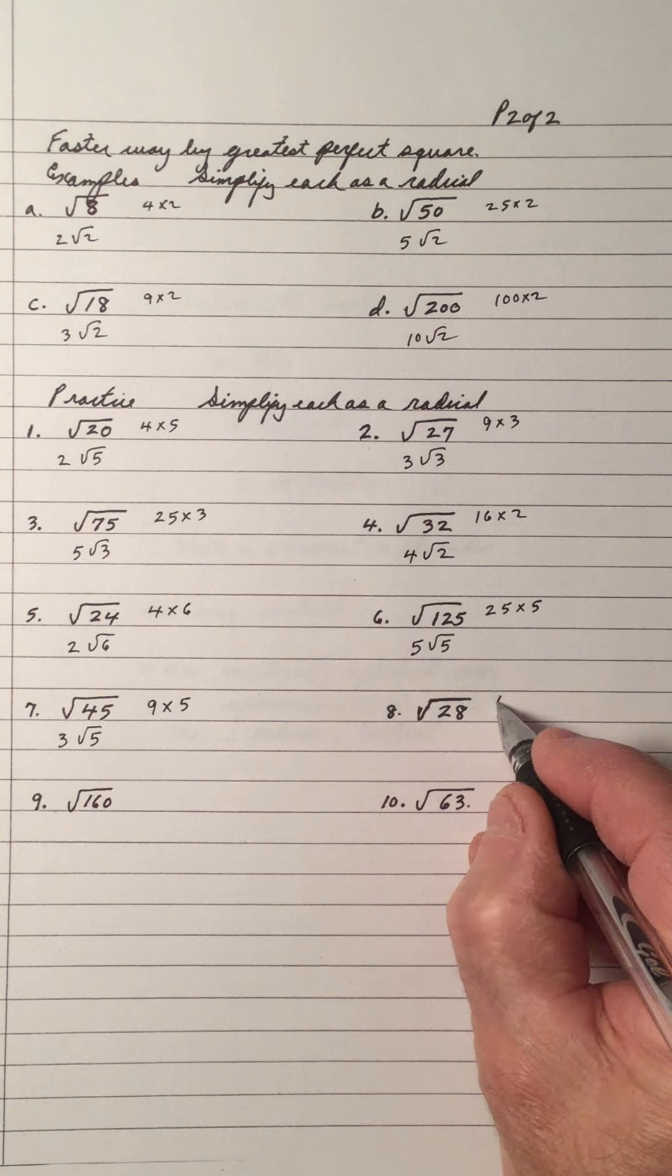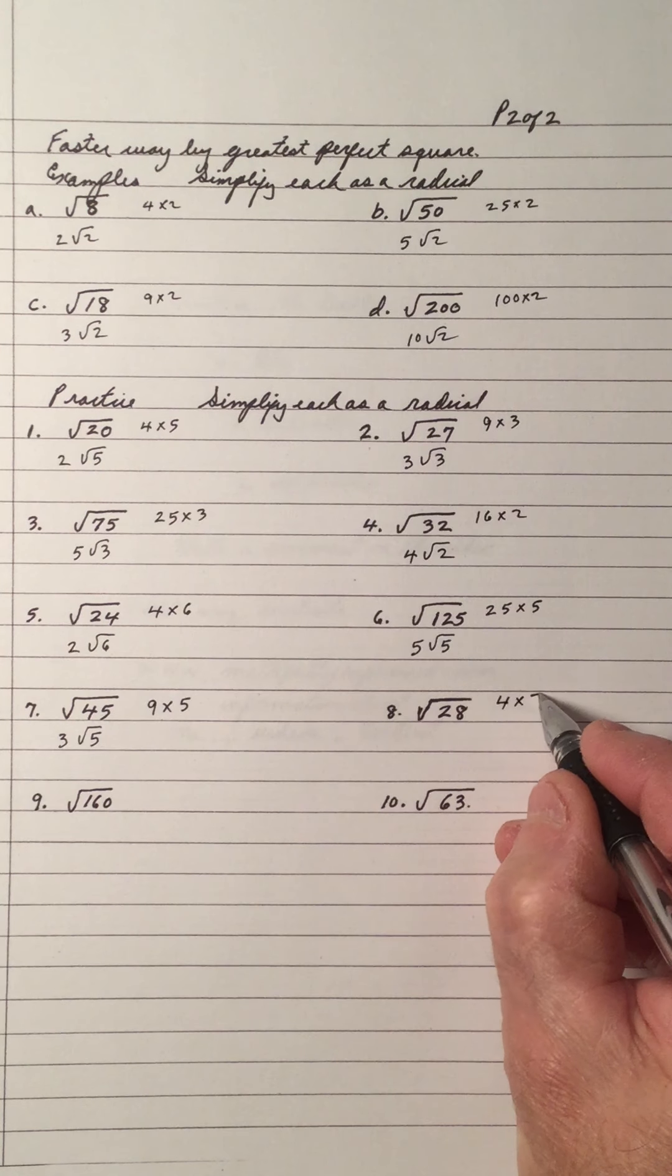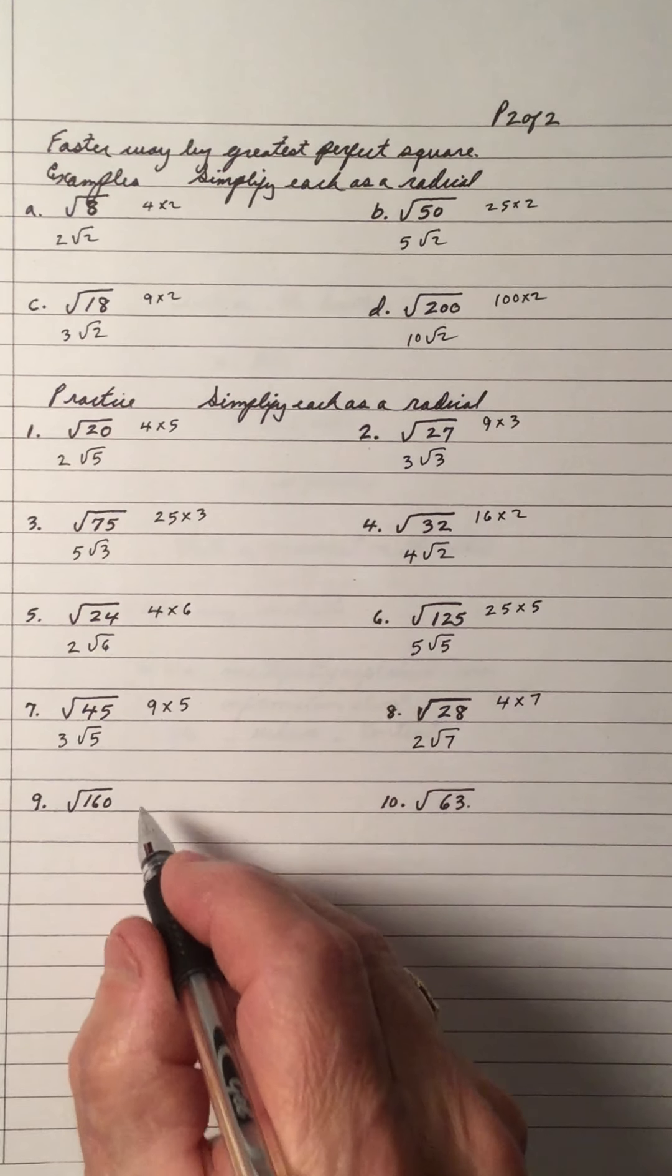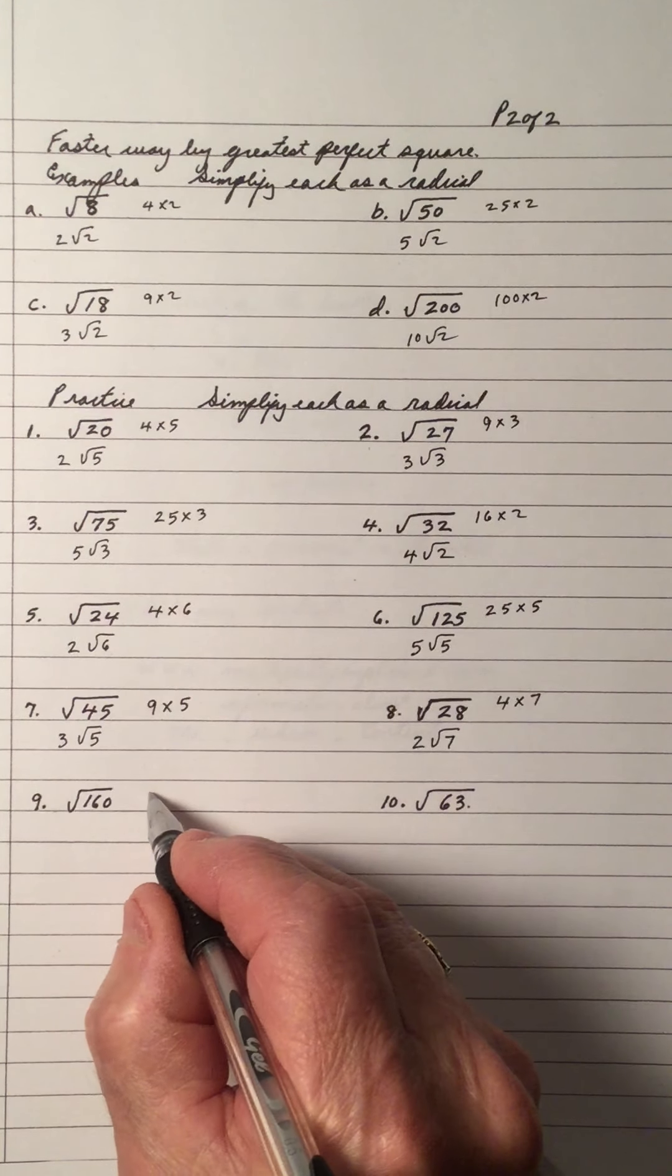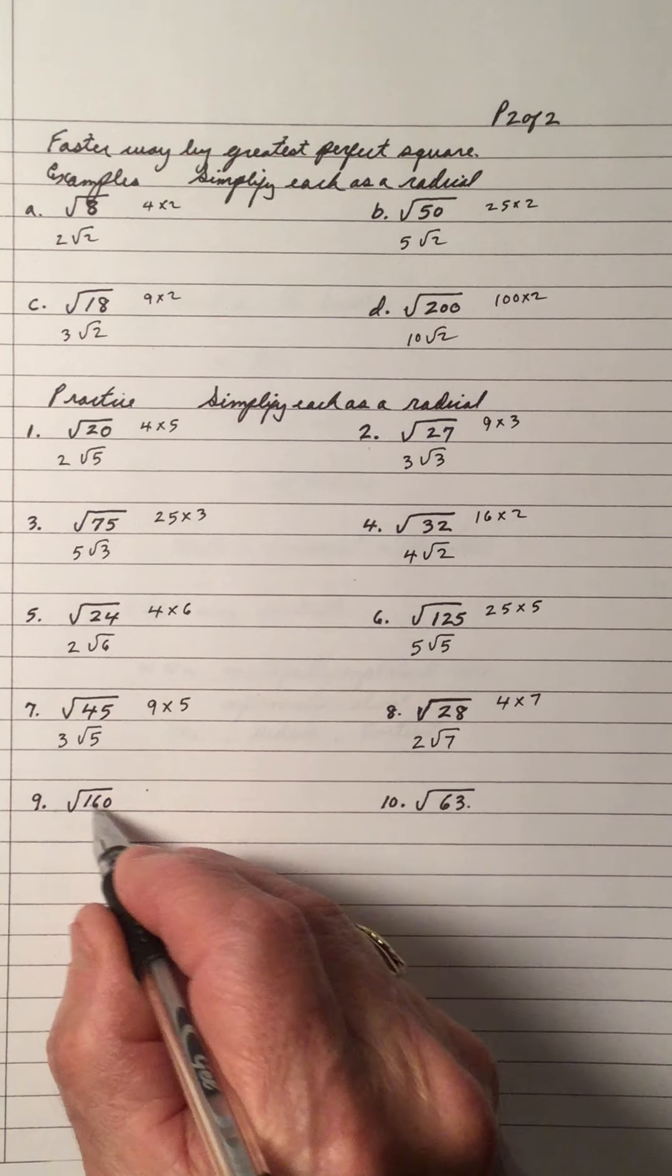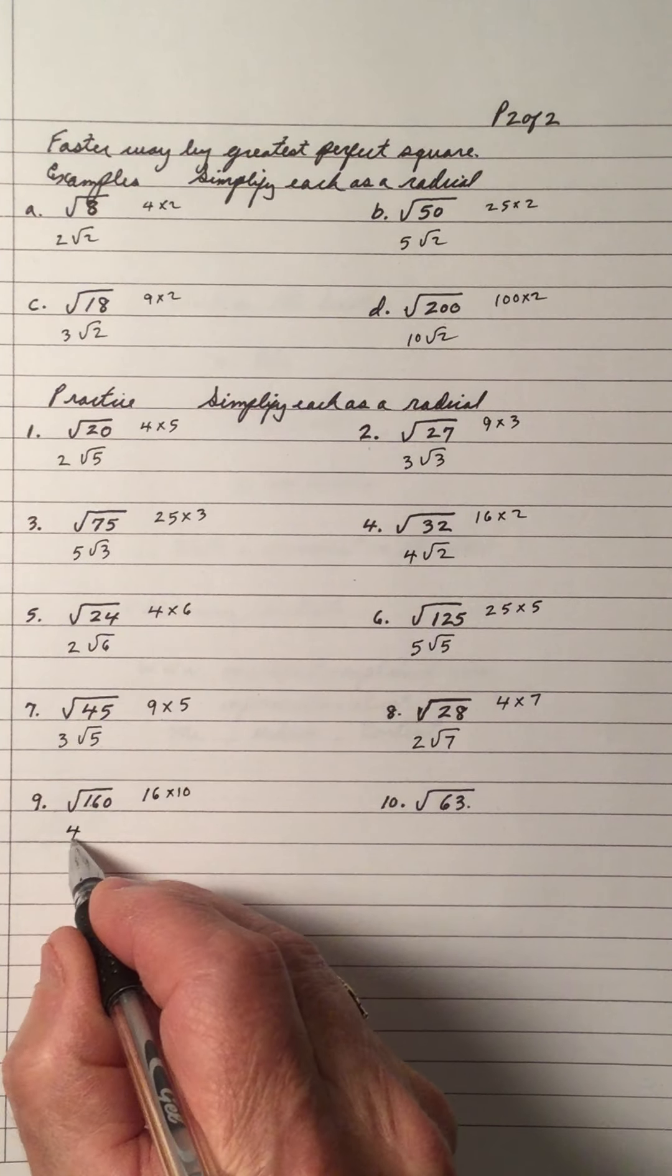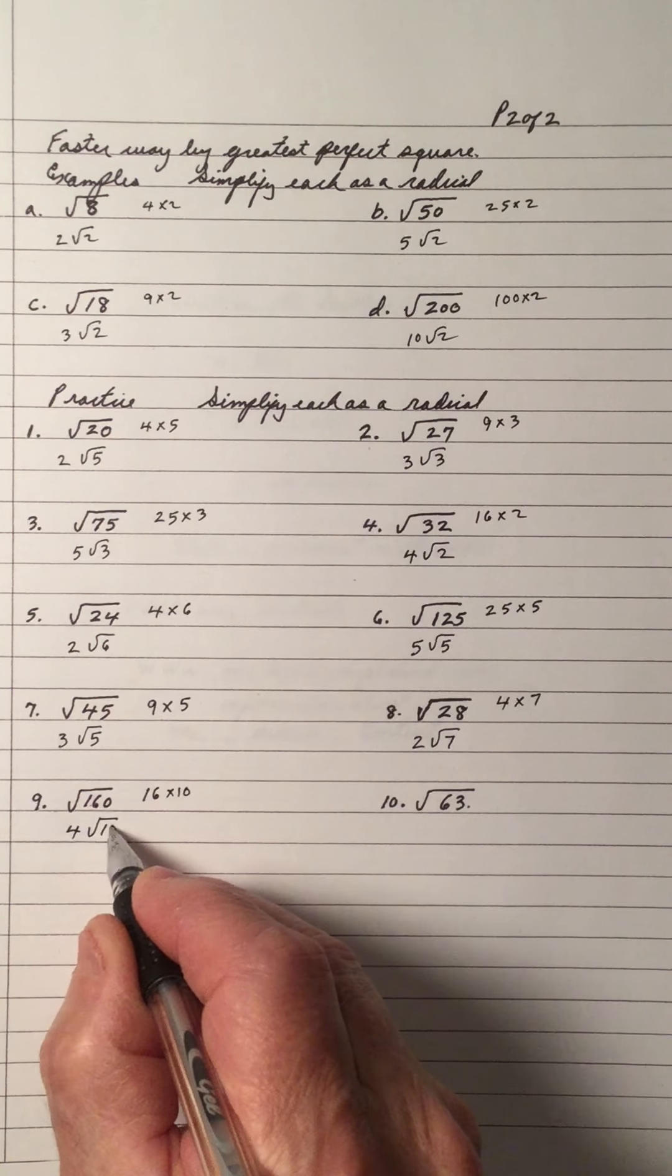28. The largest perfect square is 4. 4 times 7 gives you 28. Square root of 4 is 2 and root 7. 160. The largest perfect square is 16. 16 times 10. Square root of 16 is 4 and root 10.